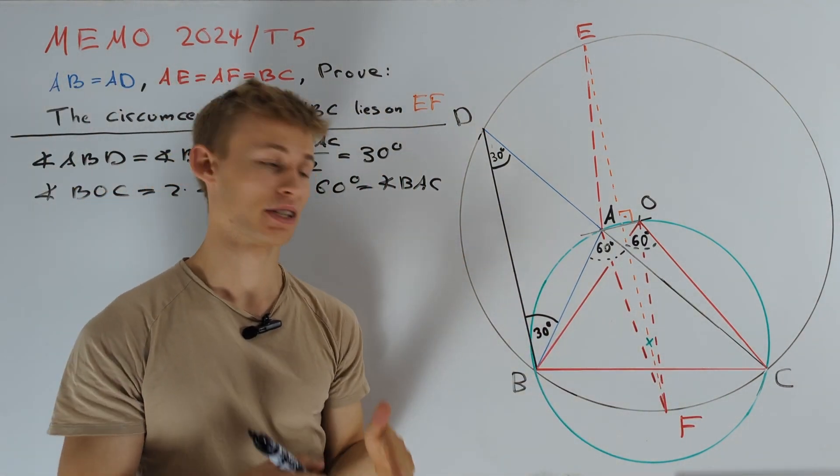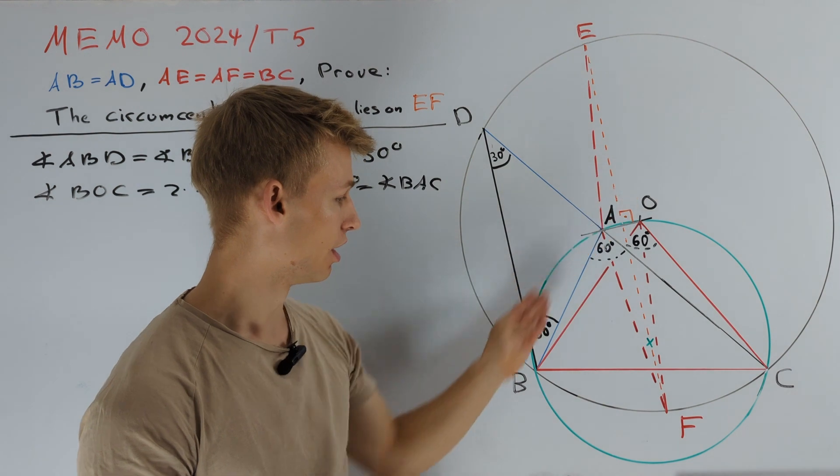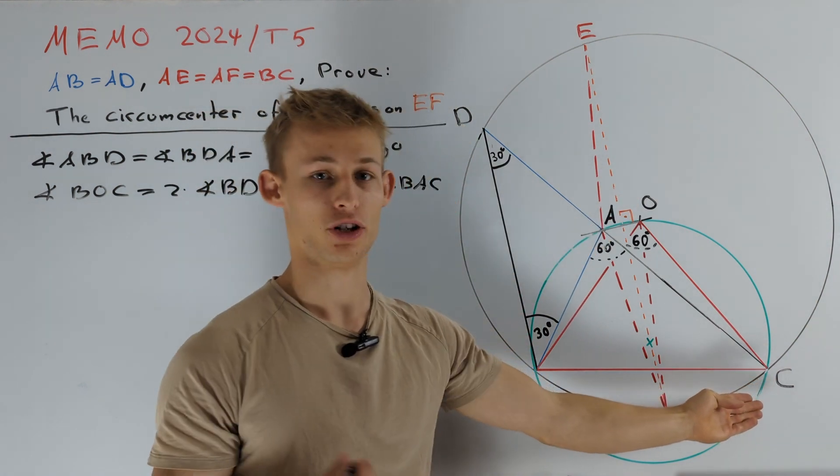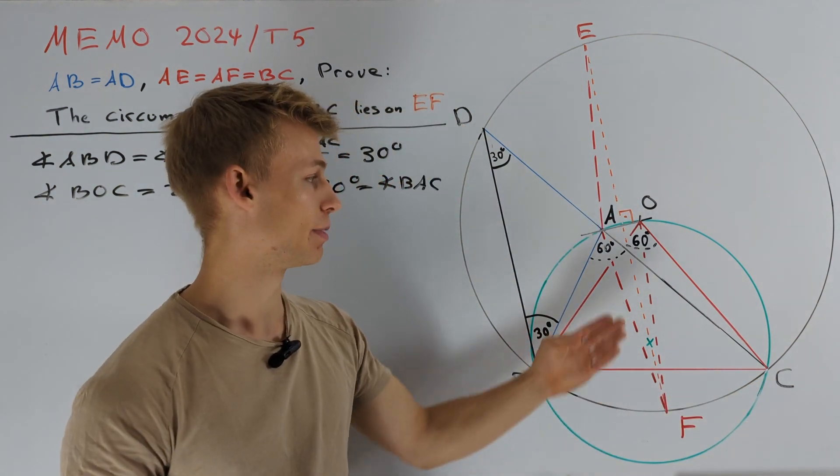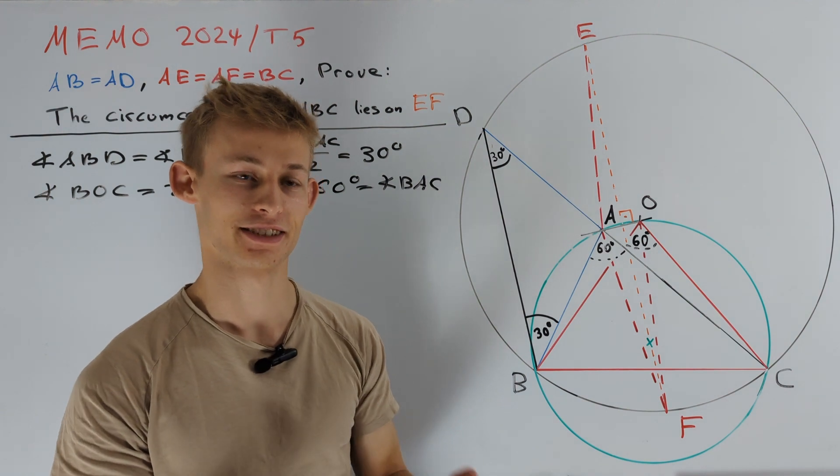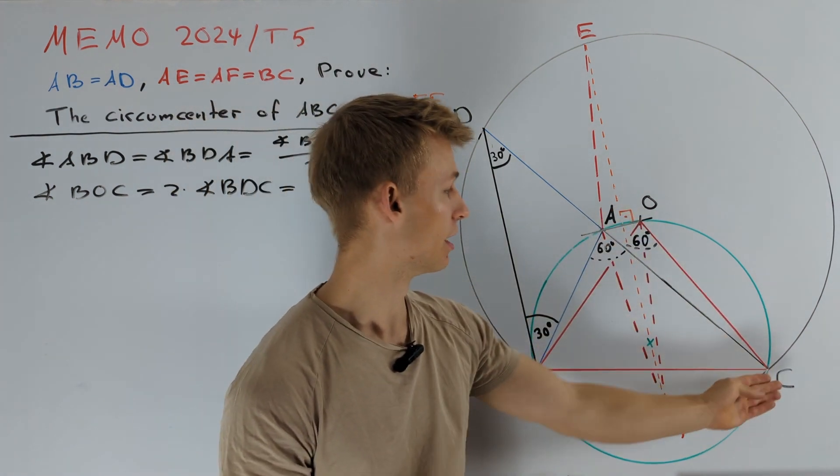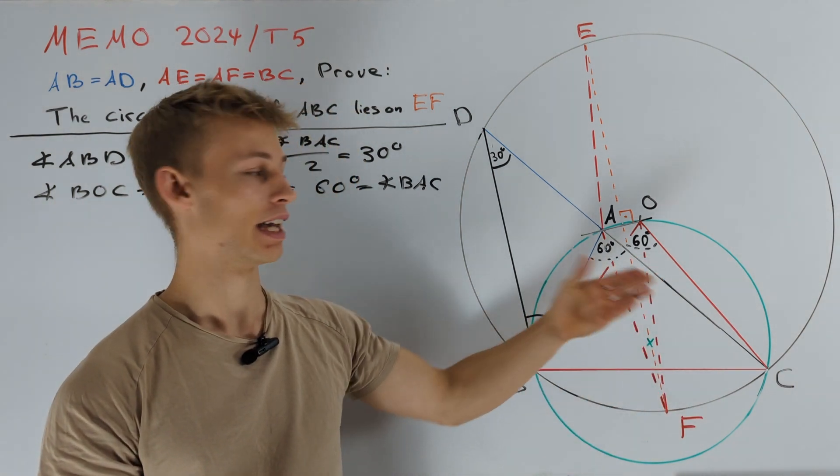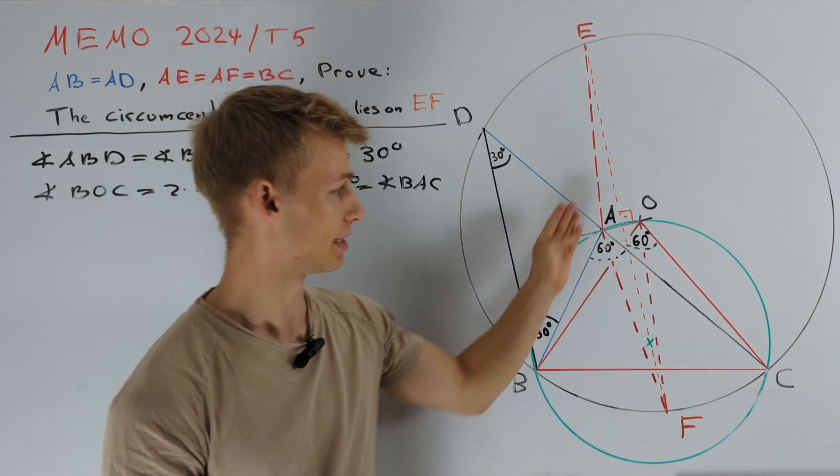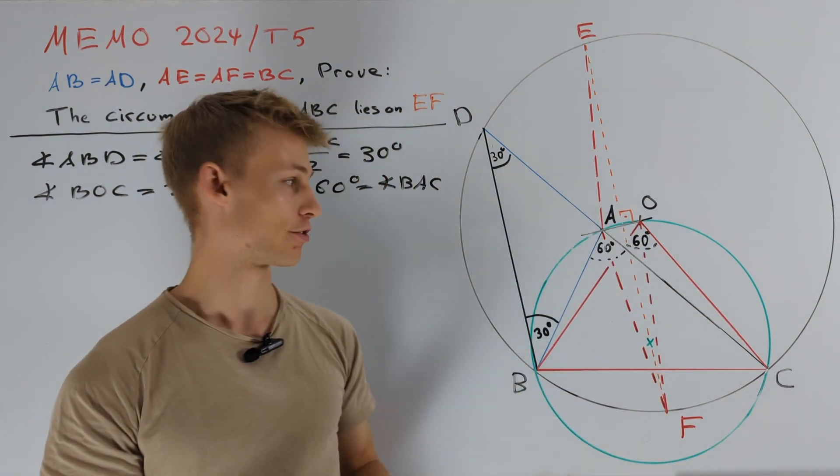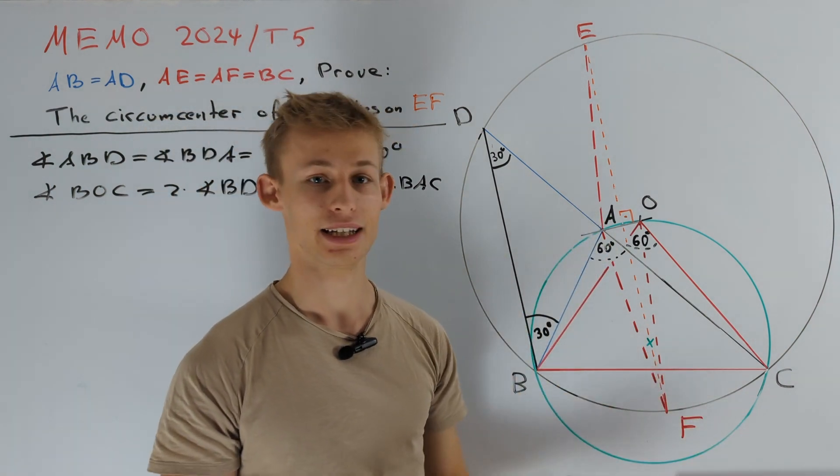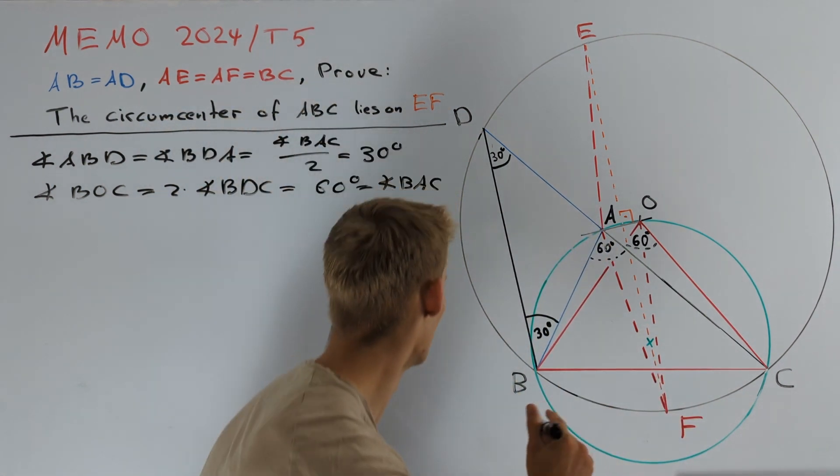So, our last step is to prove that triangle OBC is equilateral. But by taking a look at the picture, we directly see that this is true. Because we have the angle BOC to be equal to 60 degrees, and we know that OB is equal to OC. And therefore, triangle OBC is indeed equilateral. And we are done.